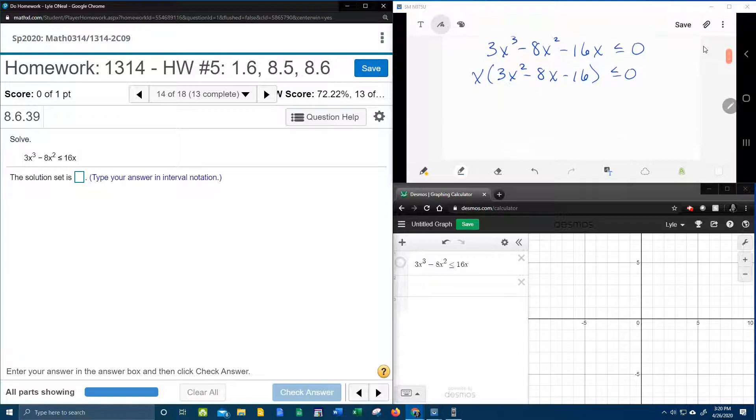And then the next thing I need to do is I need to try to factor this trinomial in the parentheses, this quadratic trinomial. And let's see, 3, 8, and 16, they don't have a common factor. I would have taken it out with the x if they would have. So what I'm going to do is I'm going to try the 3R method for factoring and see if I can get this trinomial to factor. So let's see how this goes here.